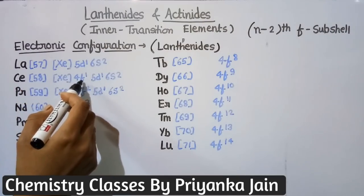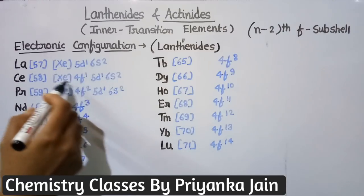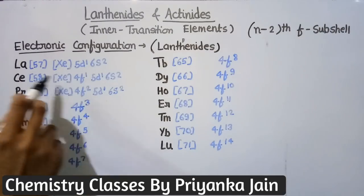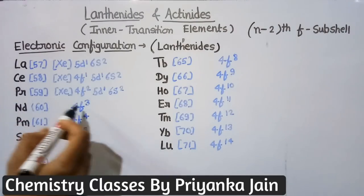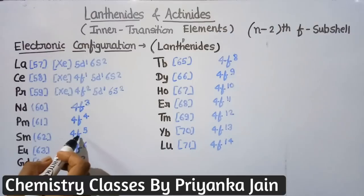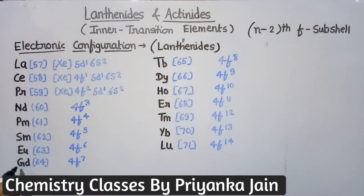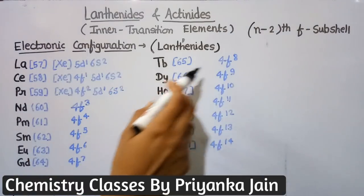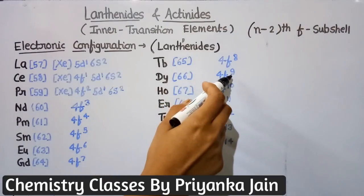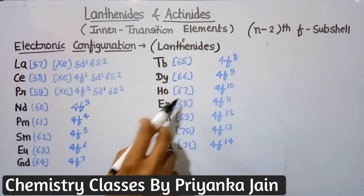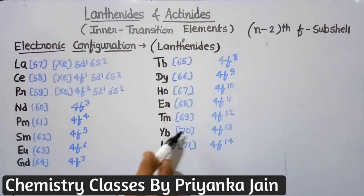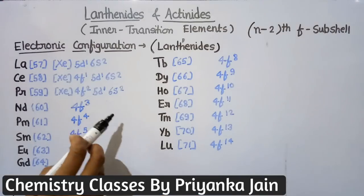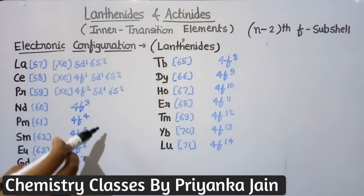After lanthanum, cerium has one electron in the 4f orbital. Then comes praseodymium 4f², neodymium 4f³, promethium 4f⁴, samarium 4f⁵, europium 4f⁶, gadolinium 4f⁷, terbium 4f⁸, dysprosium 4f⁹, holmium 4f¹⁰, erbium 4f¹¹, thulium 4f¹², ytterbium 4f¹³, and lutetium 4f¹⁴. The electrons are progressively filled in the 4f orbital.